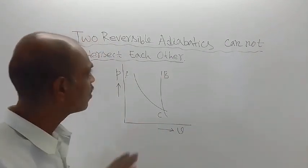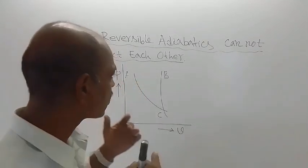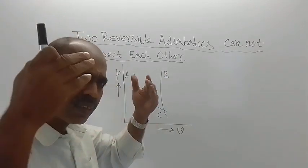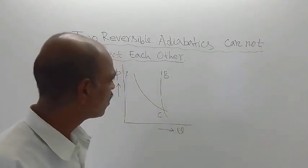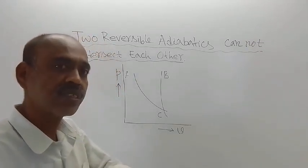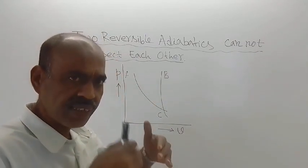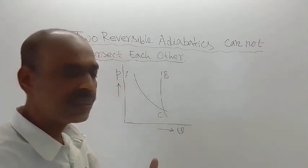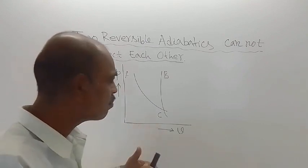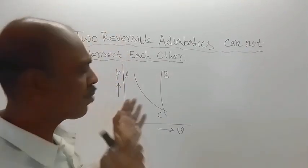We are going to prove that two reversible adiabatics cannot intersect each other. But to prove that, we have assumed that they have actually intersected. And later, we will try to prove that they actually cannot intersect — means, this is impossible. We are going to prove that this assumption is actually wrong. So that way, that proof can be made.